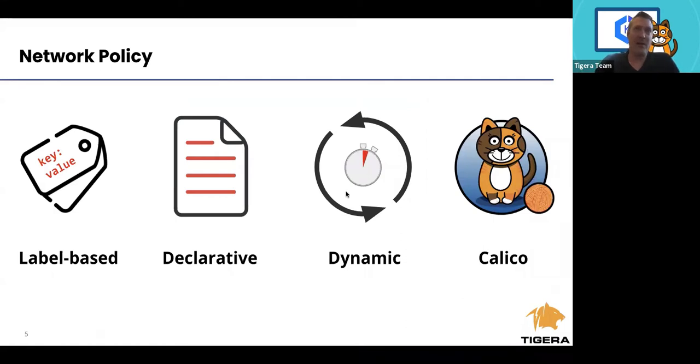Network policy is based on three different fundamentals. The first is that it's label based. Within Kubernetes you can attach a label to your pods, and then based on those labels you can create a declarative file that specifies which pods are allowed to connect to other pods based on their labels. An example is if we have a label called stage and some pods have stage equals development and some have stage equals production, you could create a declarative policy that says things labeled development are not allowed to talk to things labeled production.